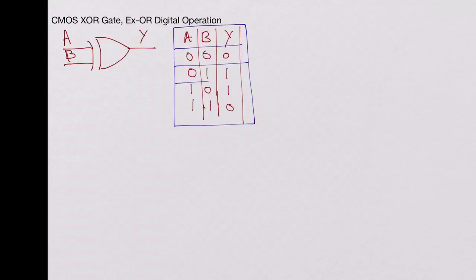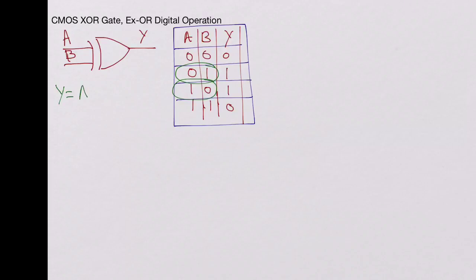Now if we try to write this in terms of an expression: the output is high during the two cases when A is 0 and B is 1, and when A is 1 and B is 0. So Y equals A-bar·B plus A·B-bar. That is the expression for the exclusive OR gate.